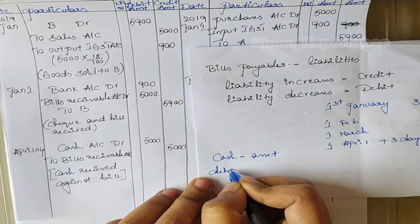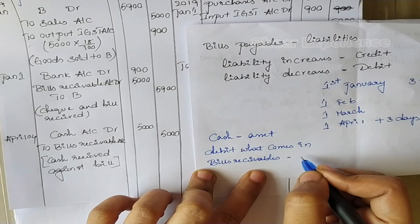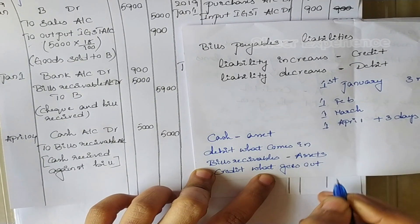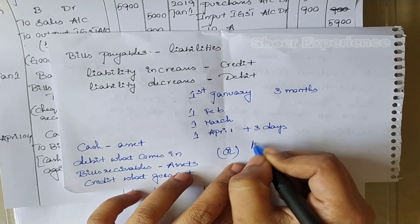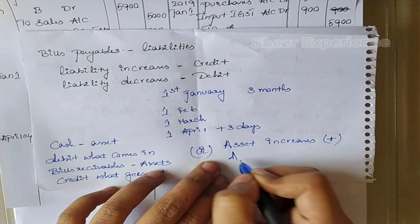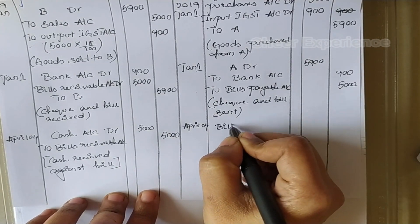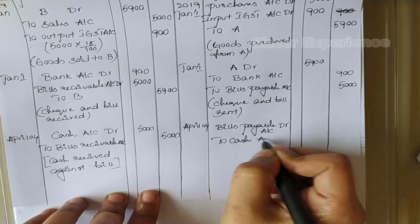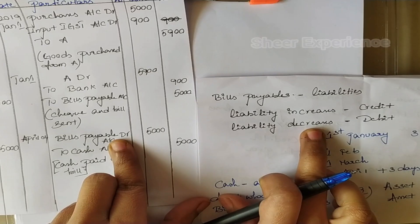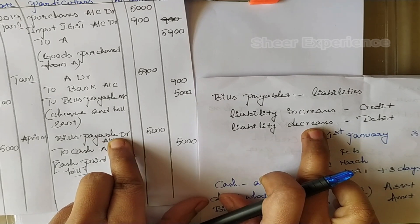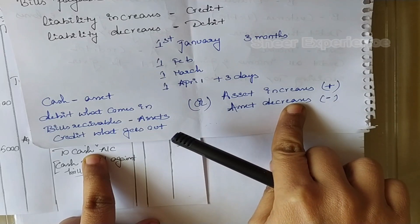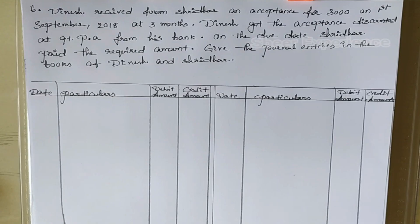Cash is an asset — debit what comes in. Bills Receivable is also an asset, but we have received the amount from B, so credit what goes out. When asset increases we debit it and when asset decreases we credit it. In B's books, B is paying the amount to A, so journal entry is: Bills Payable Account debit to Cash Account. Bills Payable is a liability — by paying, the liability of B is decreasing, so when liability decreases we debit it. Cash is an asset and it is decreasing, so we credit it.